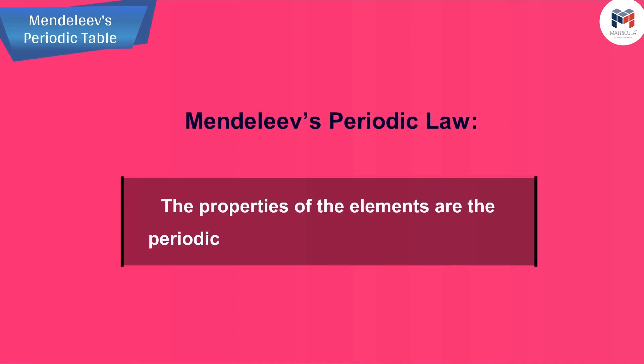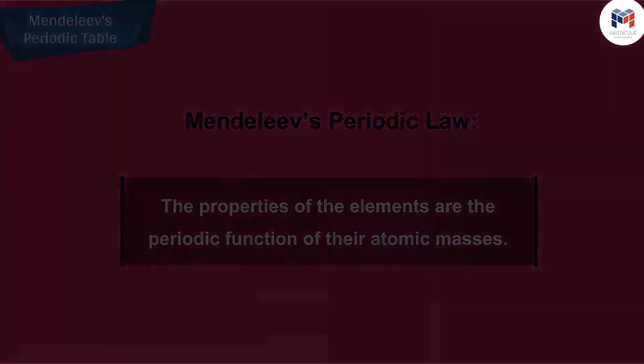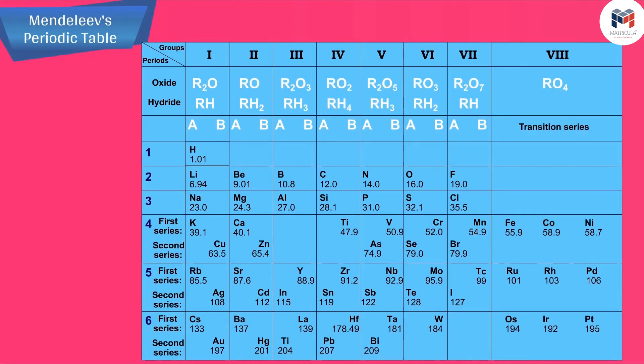According to Mendeleev's periodic law, the properties of the elements are the periodic function of their atomic masses. Mendeleev's periodic table contains vertical columns called groups and horizontal rows called periods.